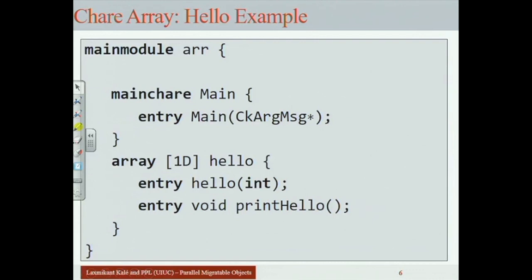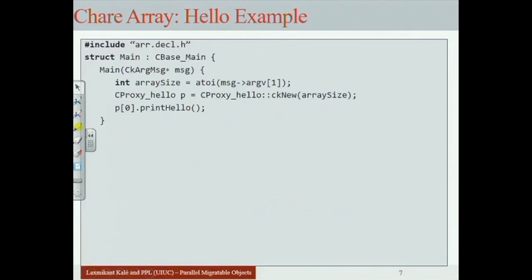Here is a hello world example with chare arrays, which illustrates most of what you do with them. In the .ci file, the main module ARR contains a main chare called main and a 1D chare array called hello — two classes. The hello class has a constructor and a method called printHello.